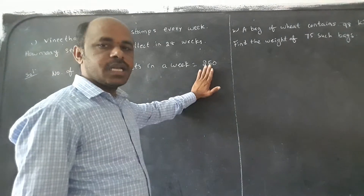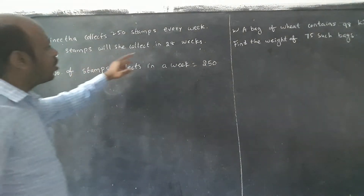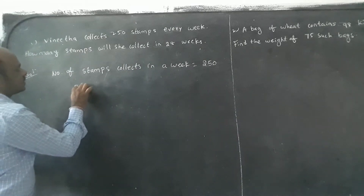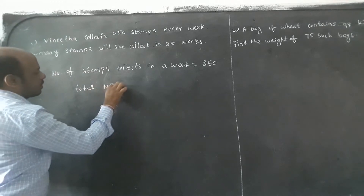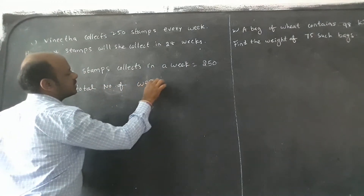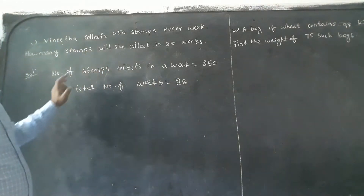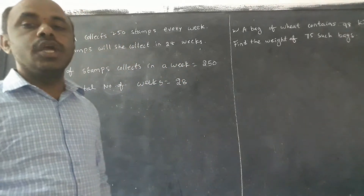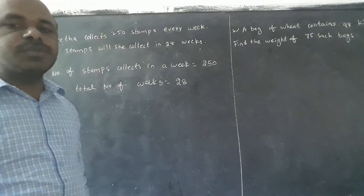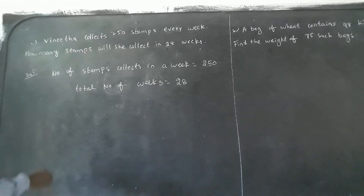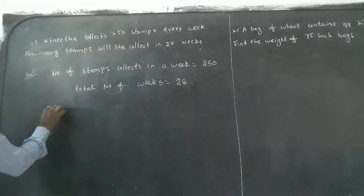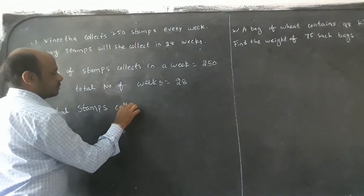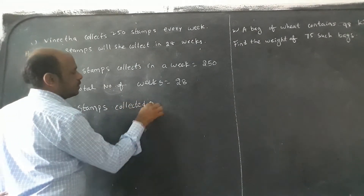One week — how many stamps she collected? 250 stamps she collected. By the same way, total number of stamps — 250 stamps. But he is asking: total 28 weeks, how many stamps she collected? So, total number of stamps collected in 28 weeks.